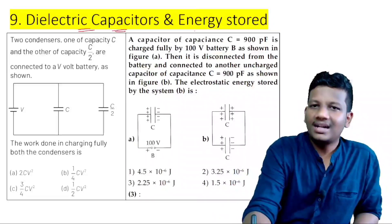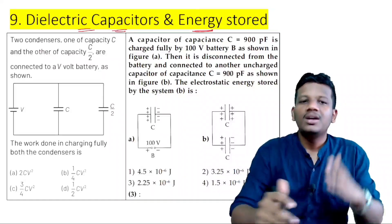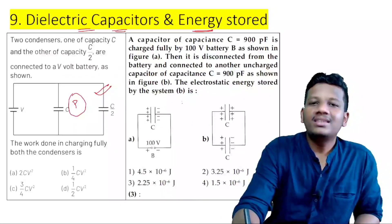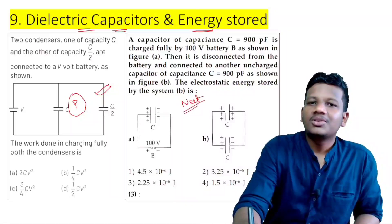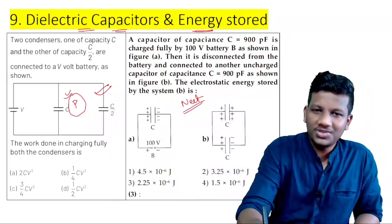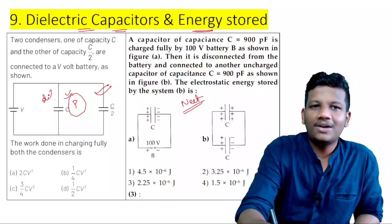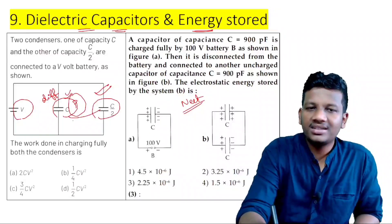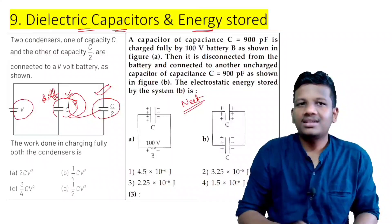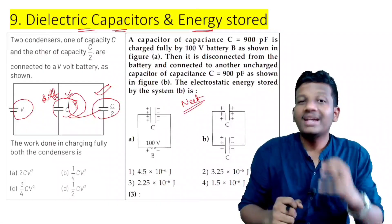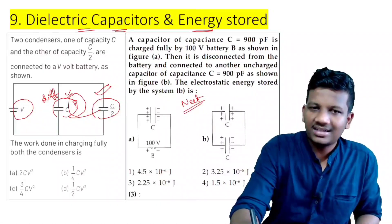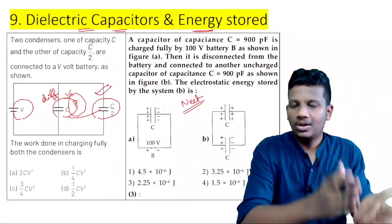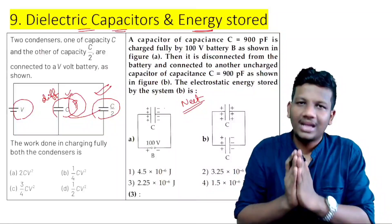The ninth question is dielectric capacitors and energy stored. One sum — you can answer the energy stored in the capacitor. This is a NEET exam question. The combination of capacitors gives the resultant capacitor; we have to look at the energy density directly. It is very easy — all of these are energy stored in capacitor sums.